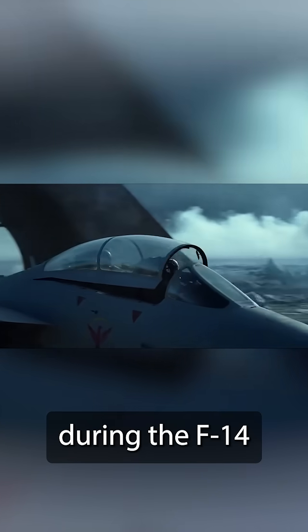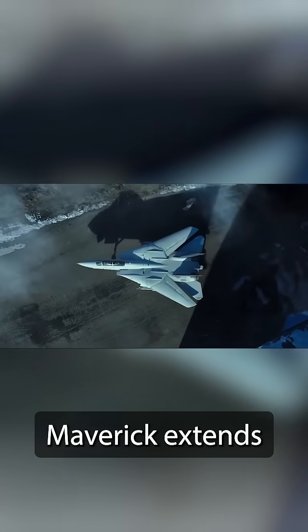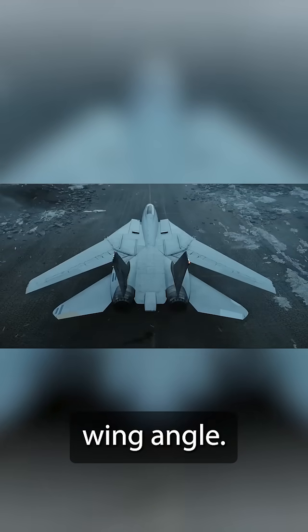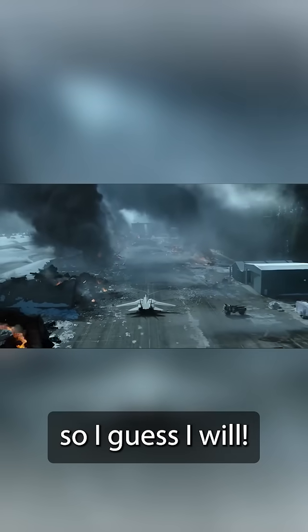Did you notice in Top Gun Maverick during the F-14 Tomcat takeoff scene from the taxiway? Maverick extends the wings of the F-14 to have a zero-sweep wing angle. This prompted Rooster to ask, 'Why are the wings coming out, Maverick?' They didn't answer in the movie, so I guess I will.